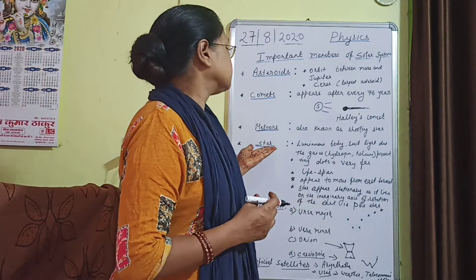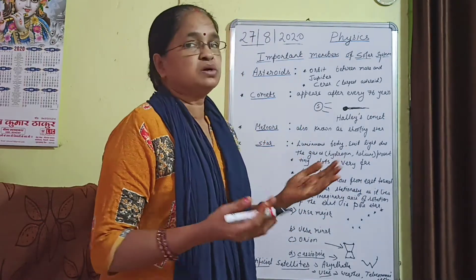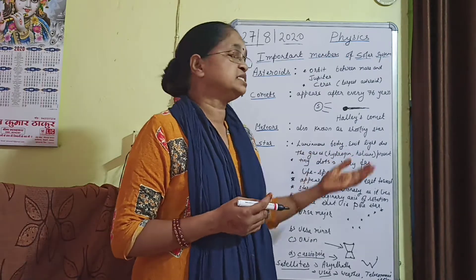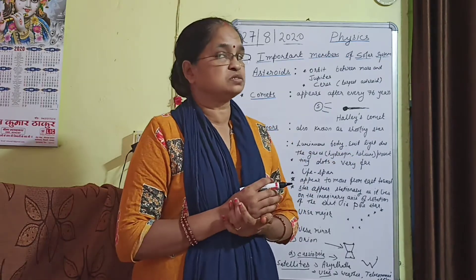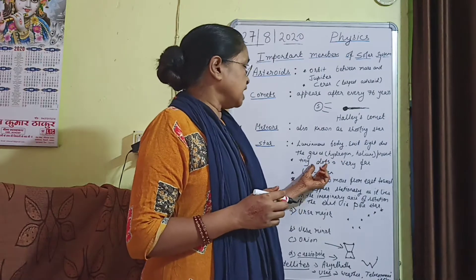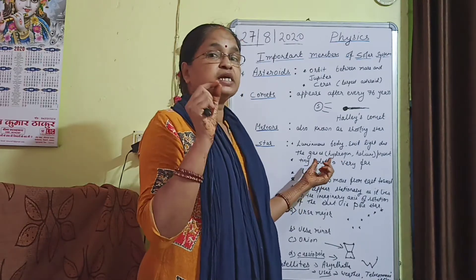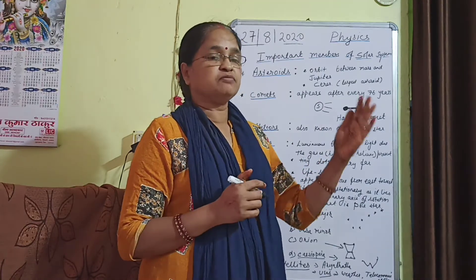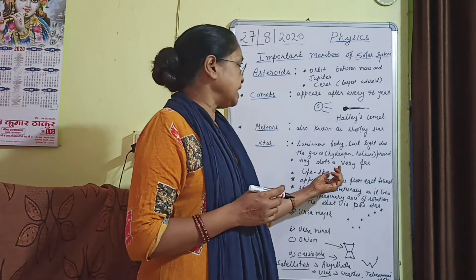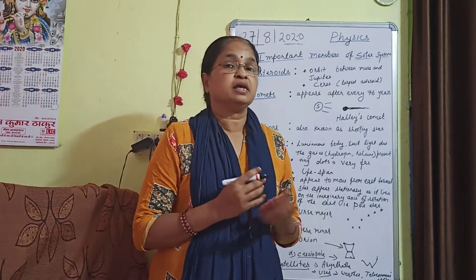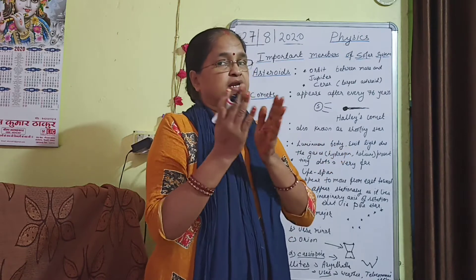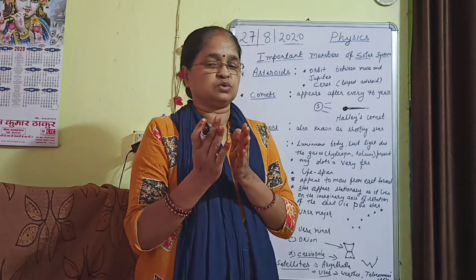Next we come to stars. Stars are luminous bodies that give us light, and that light is due to the presence of gases inside them. Stars appear as tiny dots because they are very far away from Earth. Each star has a lifespan — it takes birth, grows, and finally dies out.